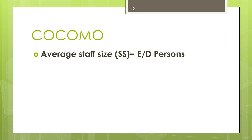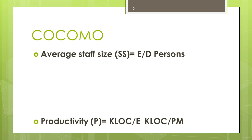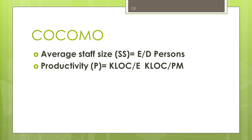These are additional expressions used in the COCOMO model. Average staff size is equal to E divided by D, where E is the effort and D is the development time; the unit of average staff size is persons. Productivity P is equal to KLOC divided by E, and the unit of productivity is KLOC per person-month.